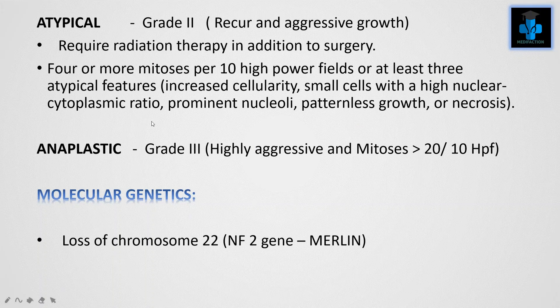Atypical meningioma is a grade 2 type of tumor. They show aggressive growth and require radiation therapy in addition to surgery. 4 or more mitoses per 10 high-power fields, or at least 3 atypical features are shown — that is, increased cellularity, small cells with a high nucleocytoplasmic ratio, prominent nucleoli, patternless growth, or necrosis.